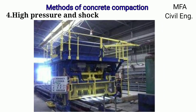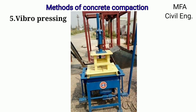The high pressure and shock method is used in precast factories. It consists of pushing the form of a precast element and subjecting it to high air or steam pressure. The vibro pressing method is also used for precast elements. External pressure is applied from the open surface of the concrete in the mold, and vibration is applied to the bottom of the mold. This gives a precast part of greater density and very high quality.